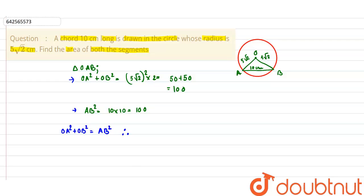Therefore, we can say that the angle theta is equal to 90 degrees, because triangle OAB is satisfying the Pythagoras theorem.